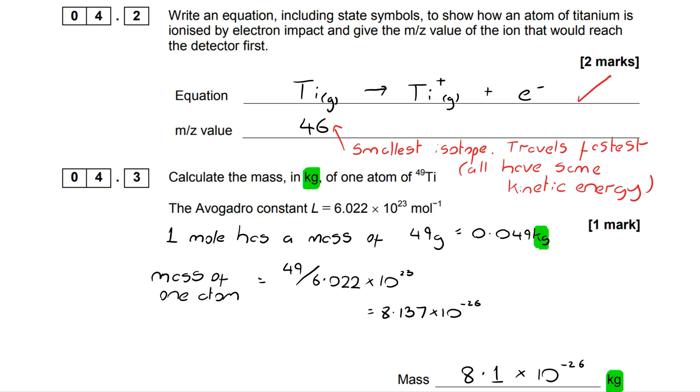Now the official mark scheme rounded this to 8.1. If you take a look at the data, see if you can work out why that was the case. It came out as 8.137 × 10^-26 and I've rounded it to 8.1 × 10^-26.